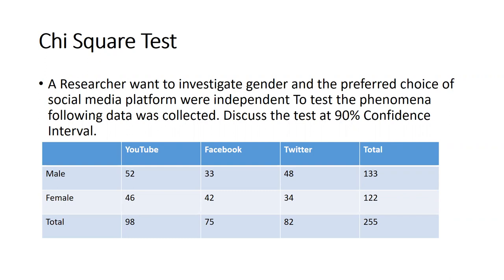We have this data and in the last column you can see the total, which is the sum of all three numbers. For males: YouTube 52, Facebook 33, Twitter 48 — so total 133. Female data is 46 plus 42 plus 34, which becomes 122. Adding both gives 255 total. Independently: YouTube total 98, Facebook 33 + 42 = 75, Twitter 48 + 34 = 82. Total data is 255.